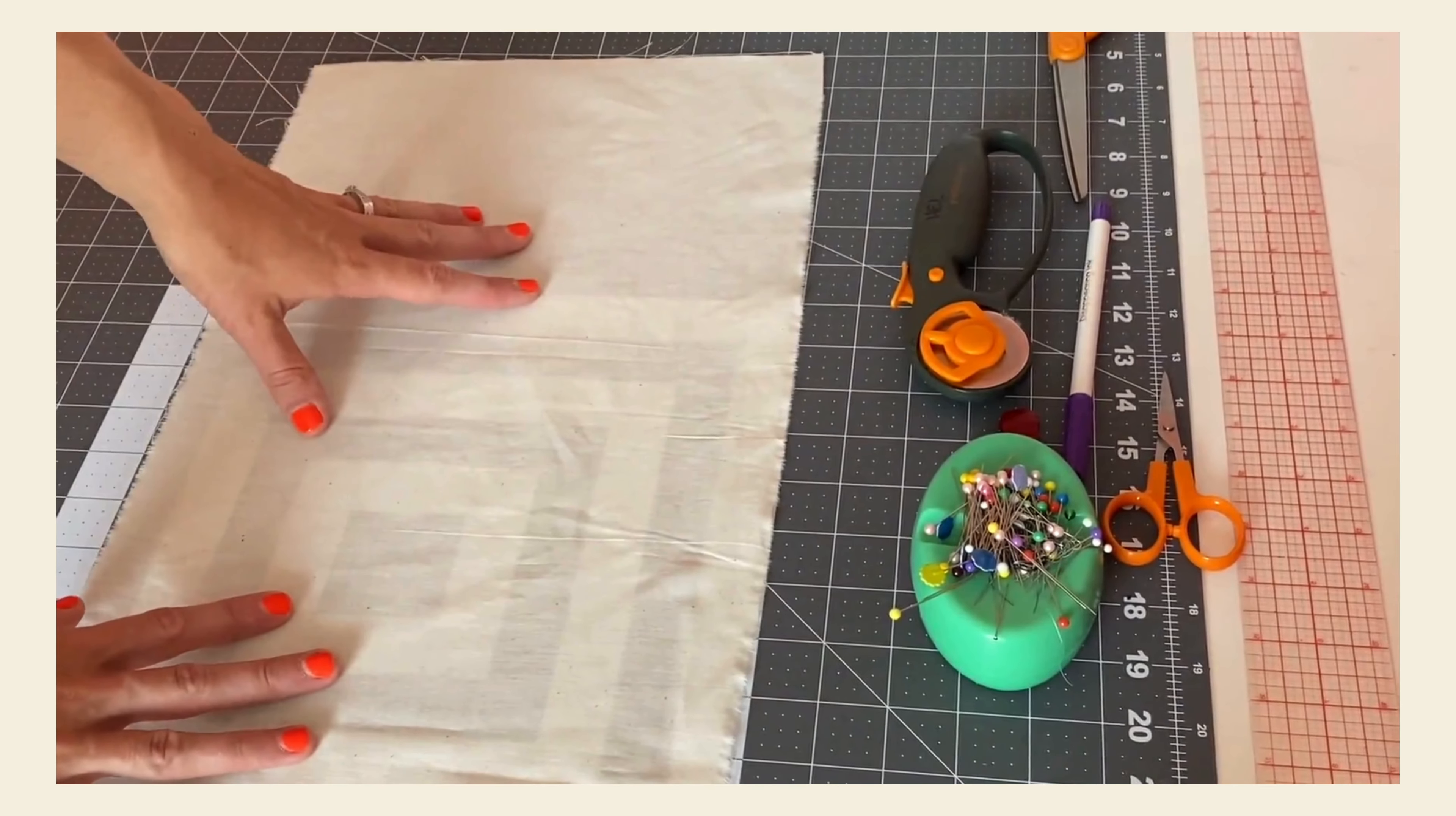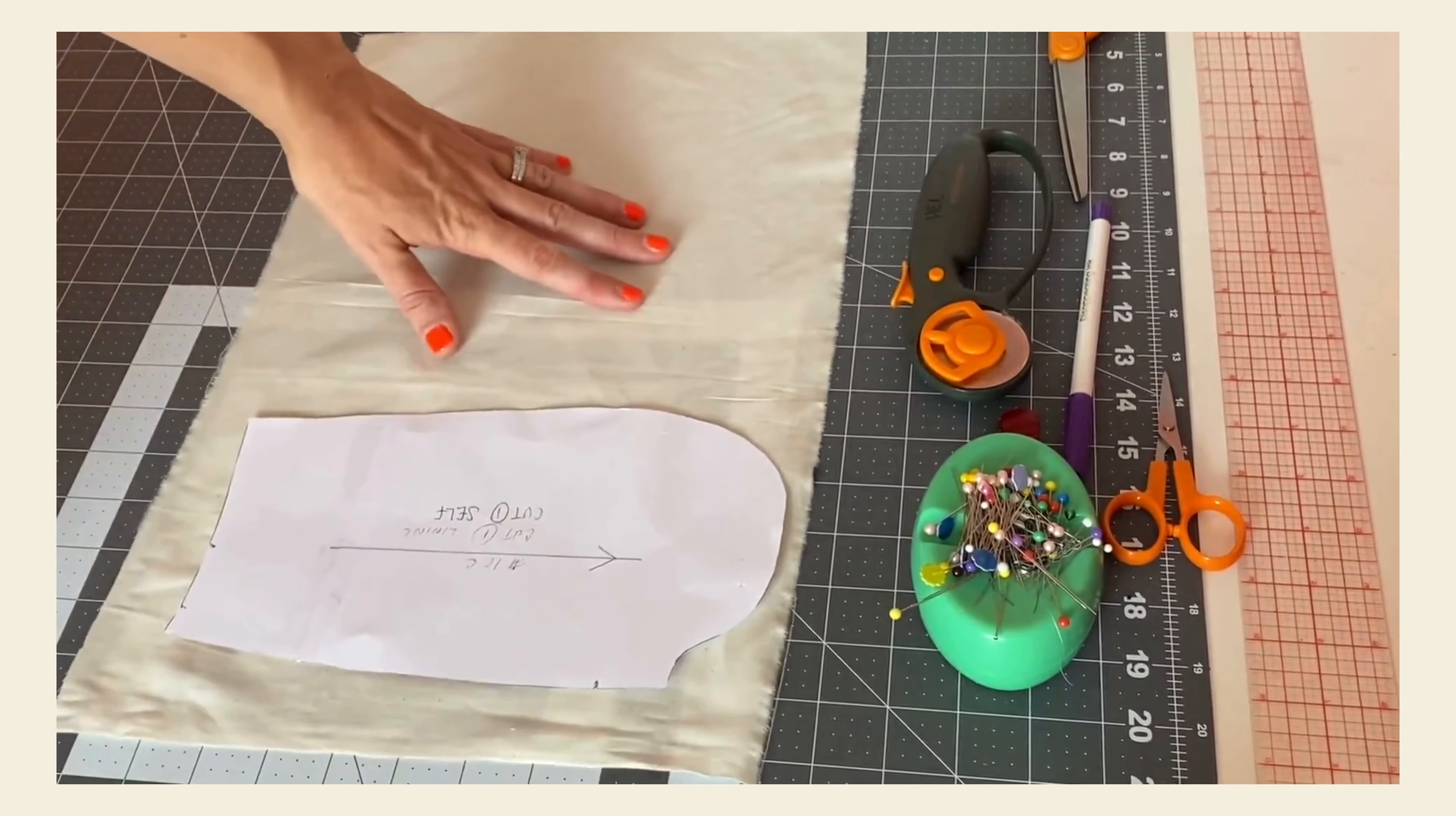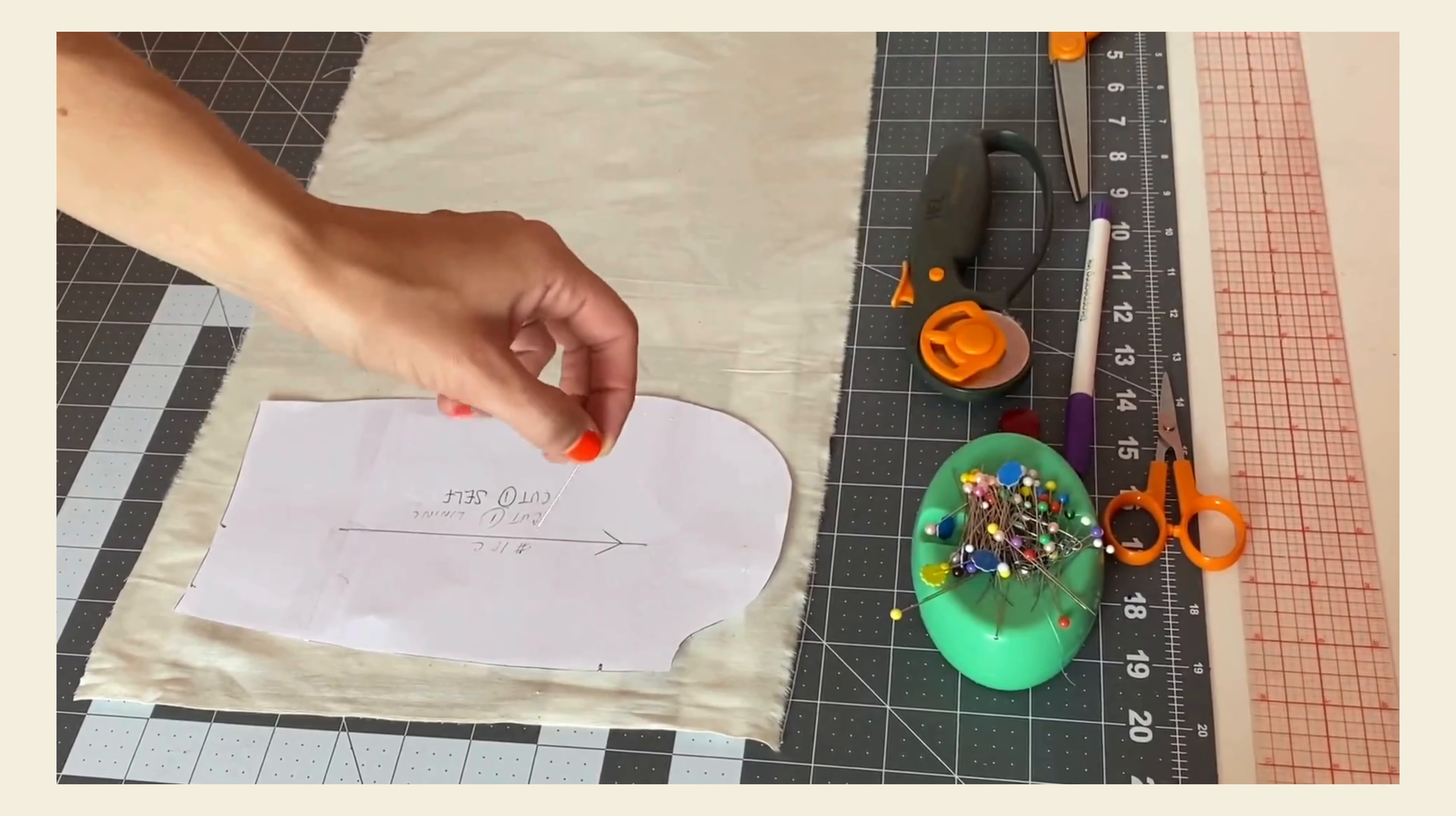So I've located my selvedge on this fabric and I've located the grain line arrow on my pattern piece. So that means I know now which direction I need to lay my pattern piece in order to make sure that the grain line is correct and the stretch is correct. I'm going to lay it nice and flat down on my fabric, making sure there's no folds or lumps hidden by the pattern piece on the fabric. Now it's time to pin our pattern piece to our fabric.